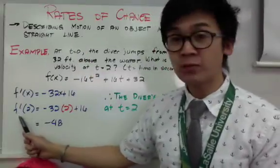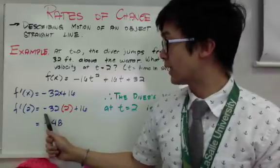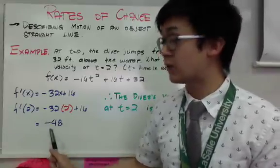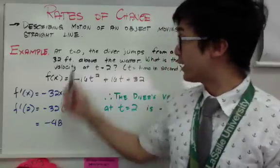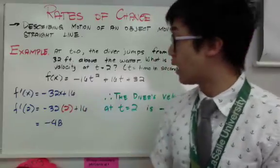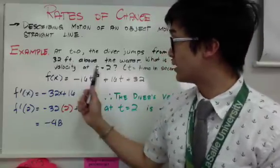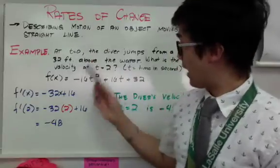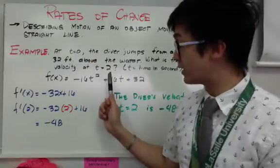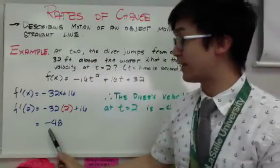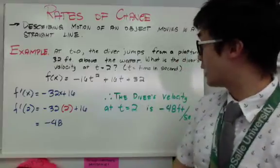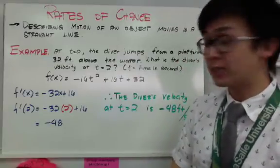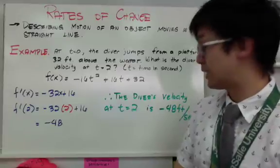At f prime of 2, by substitution, negative 32 times 2 plus 16 is equal to negative 48. In this word problem, we found out that the diver's velocity at time equals 2 seconds is negative 48 feet per second.